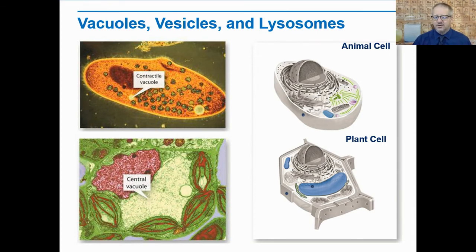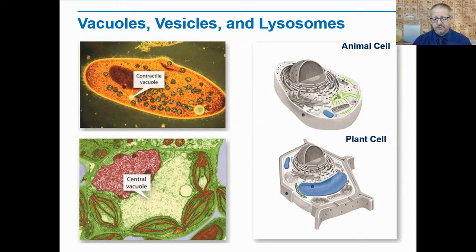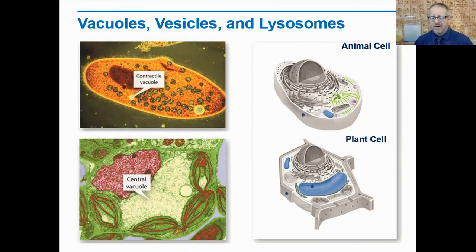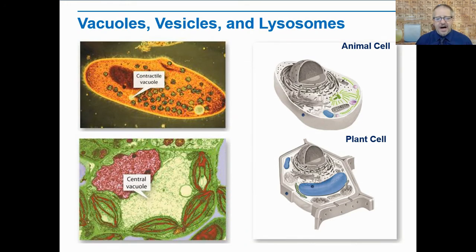There are also smaller vesicles that function to both store and transport materials within the cell. They also help transport materials to and from the external cellular environment outside of the cell. Vesicles transport materials to the cell membrane in particular. Why is it important that cells transport materials using vesicles rather than having those materials move on their own? The vesicles keep materials segregated from other materials in the cell, keeping everything contained and preventing things from interacting that should not.